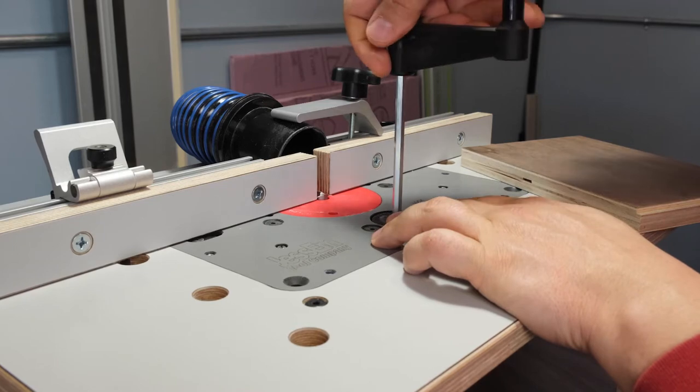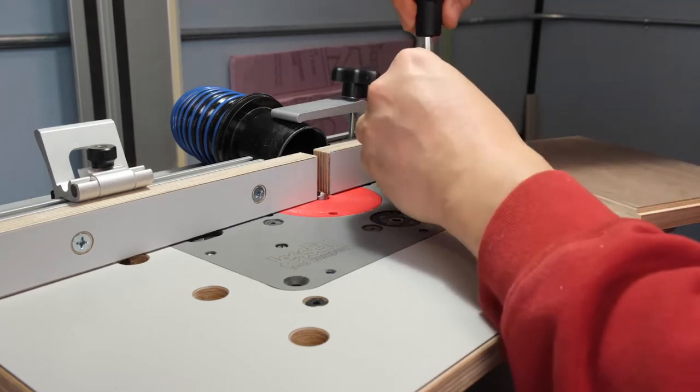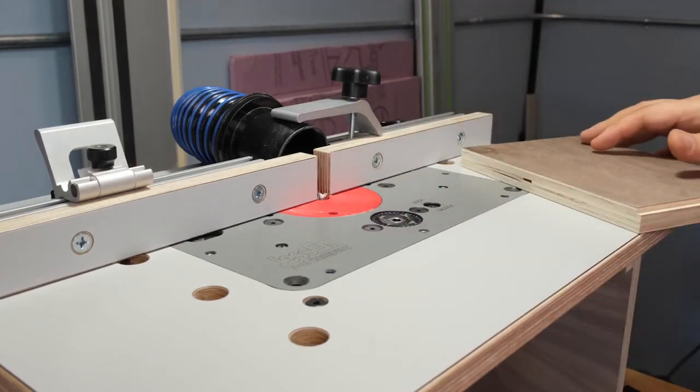Raise the bit slightly to reduce the tongue thickness. Do these raises in small increments. You don't want to make the tongue too thin.